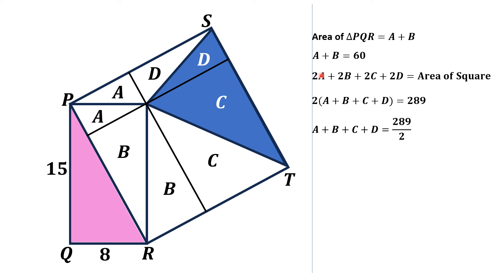We have the value of A plus B which is 60. Substituting into this equation, 60 plus C plus D equals 289 divided by 2. From here, C plus D equals 289 minus 120 over 2, and from here, C plus D equals 169 by 2.